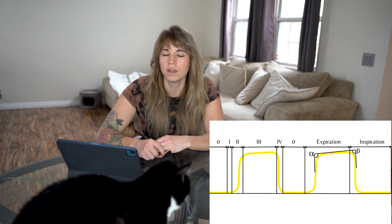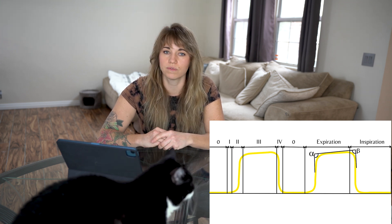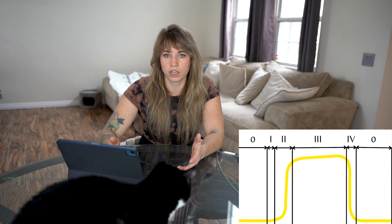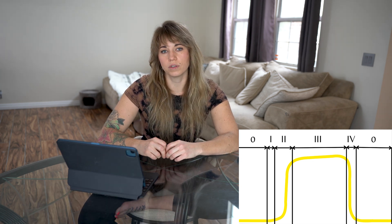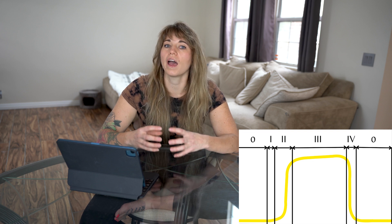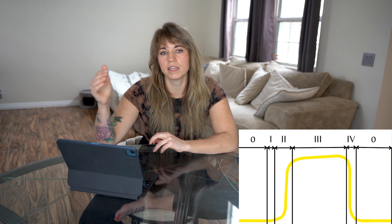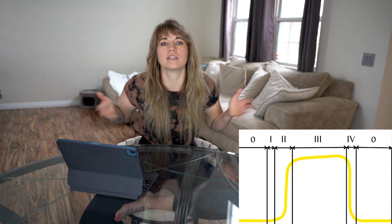Now let's talk about interpreting your capnogram — the waveform produced by your capnometer. Today I'm going to be talking about five phases labeled zero through four. Phase one represents the beginning of expiration, where CO2 begins at zero as your anatomical dead space is expired — gas within the endotracheal tube that did not participate in gas exchange. Phase two represents the rapid uptick in CO2 as dead space ventilation ends and CO2 from the lungs is rapidly exhaled. The angle between phase two and phase three is your alpha angle, which is normally around 110 degrees.